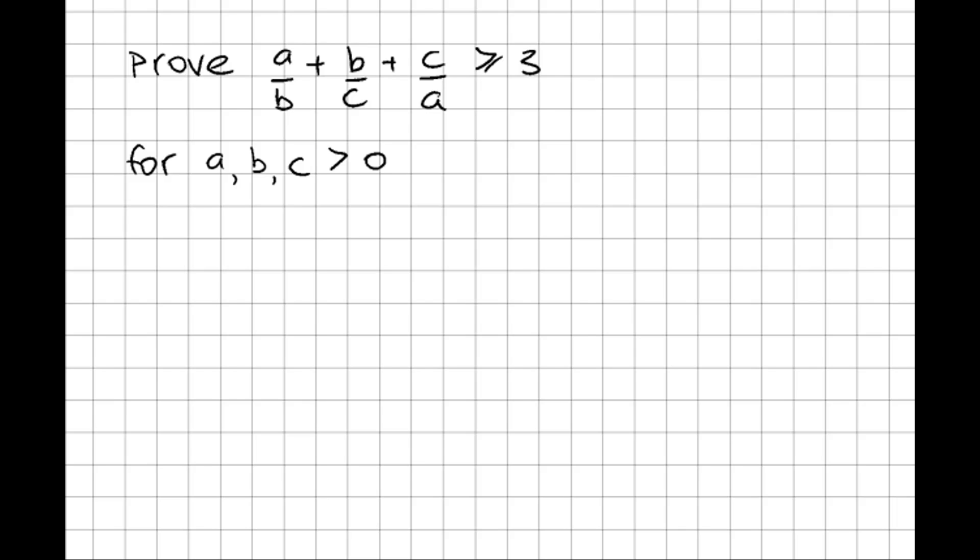For this question I think the most helpful tool for us will be the AM-GM inequality. If you're not familiar with that inequality, what it says is that the arithmetic mean of a set of terms will always be greater than or equal to the equivalent geometric mean of those terms. For us we've got three terms: